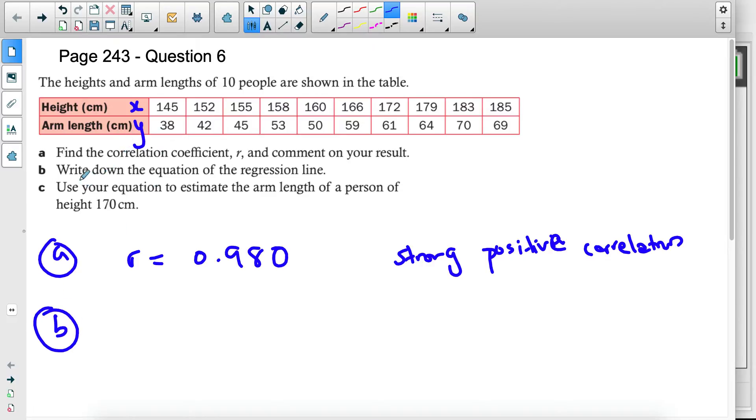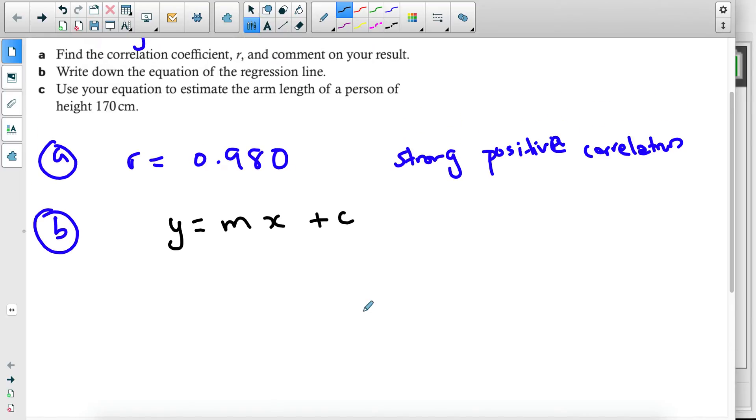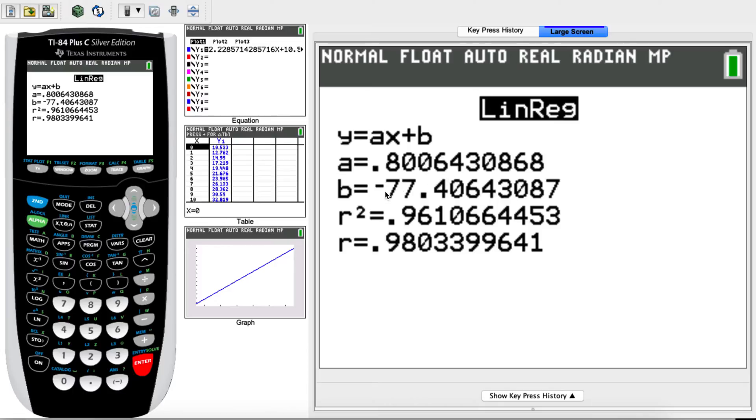For part B, you are expected to write the equation for the regression line. Now, the equation for the regression line is typically y equals to mx plus c. Your calculator will not use m nor x. It's going to use a and b. So just to point that out, they're going to use a and b. So we just take these values from the same page, the linear regression page.